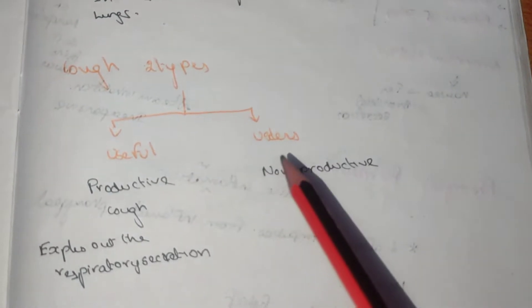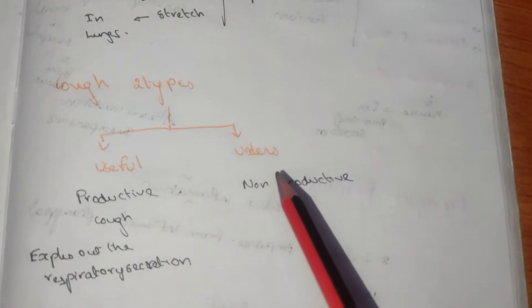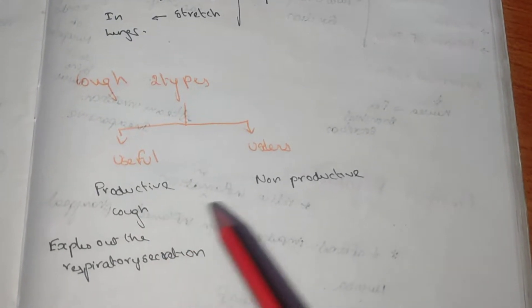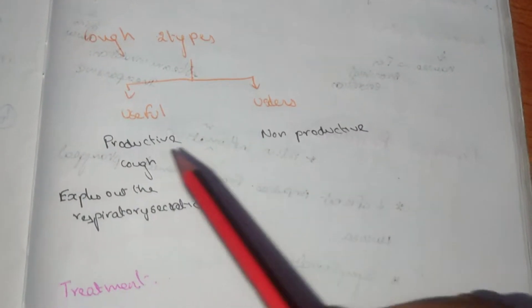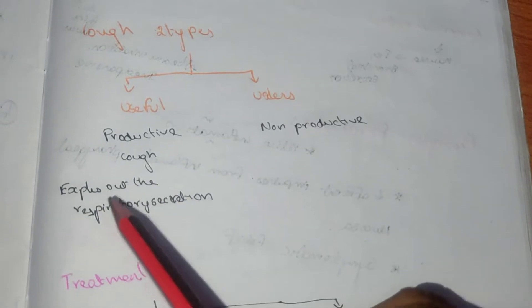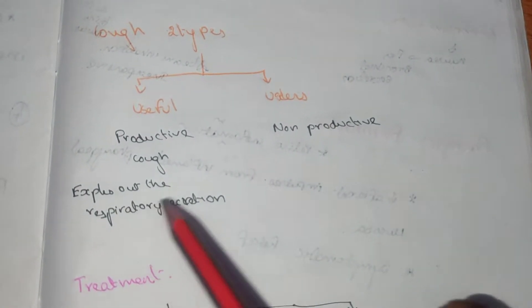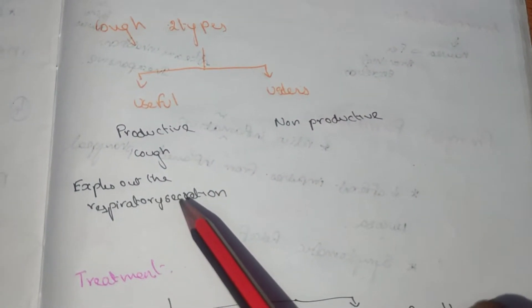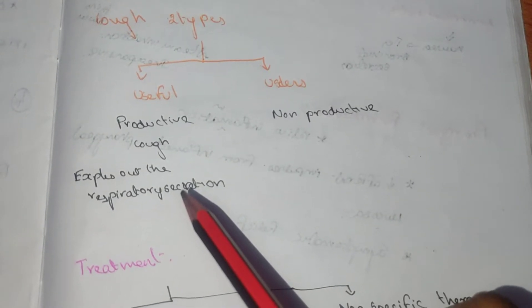One is useful cough and the other is useless cough, which is otherwise known as protective cough and non-protective cough. In protective cough, it expels out the respiratory secretion. There is expulsion of the respiratory secretion along with the foreign particles.